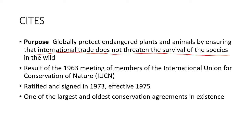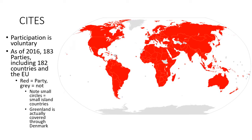CITES was a result of a 1963 meeting of the IUCN, then ratified and signed in 1973 and effective in 1975 — the mid-seventies. It is one of the largest and oldest conservation agreements in existence. You don't need to know specific dates. Participation is voluntary — you can't force a country to sign on. As of 2016, there were 183 parties, including 182 countries, and the EU counts as a party.